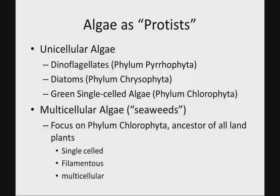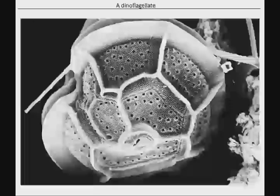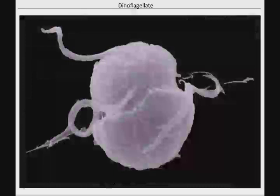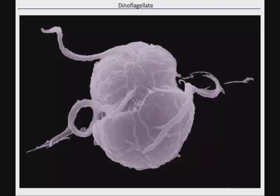The first group is the dinoflagellates, characterized by their dual flagella. They often have an equatorial groove with one flagellum and a second flagellum. They are found in both marine and freshwater environments, and most are photosynthetic — they're autotrophs making their own food. The reason we pay attention to dinoflagellates is because they're responsible for red tides.